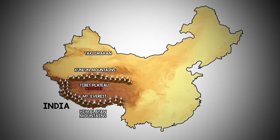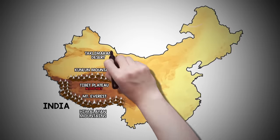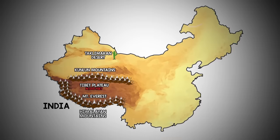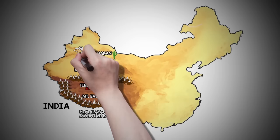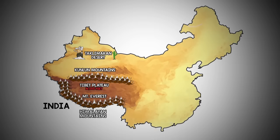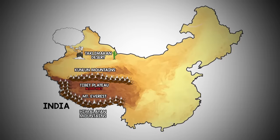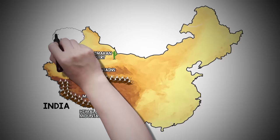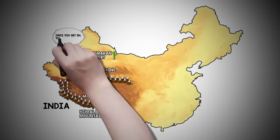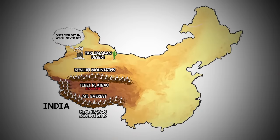The Taklimakan Desert of northwest China is a cold desert climate, plunging as low as negative 4 degrees in winter. Its name is commonly translated as, "Once you get in, you'll never get out."